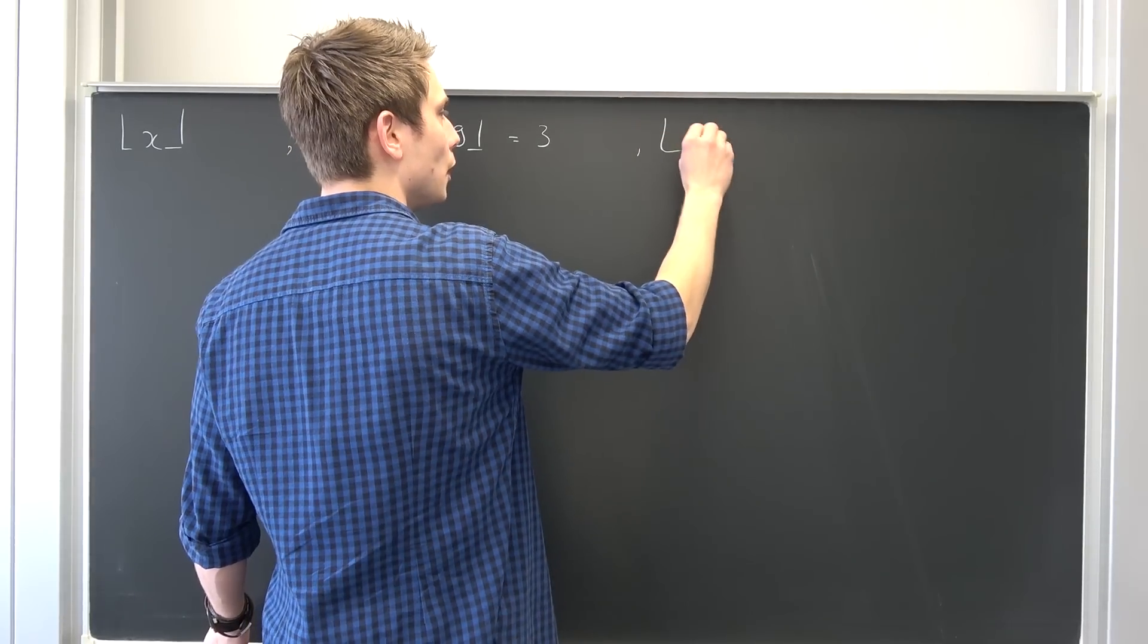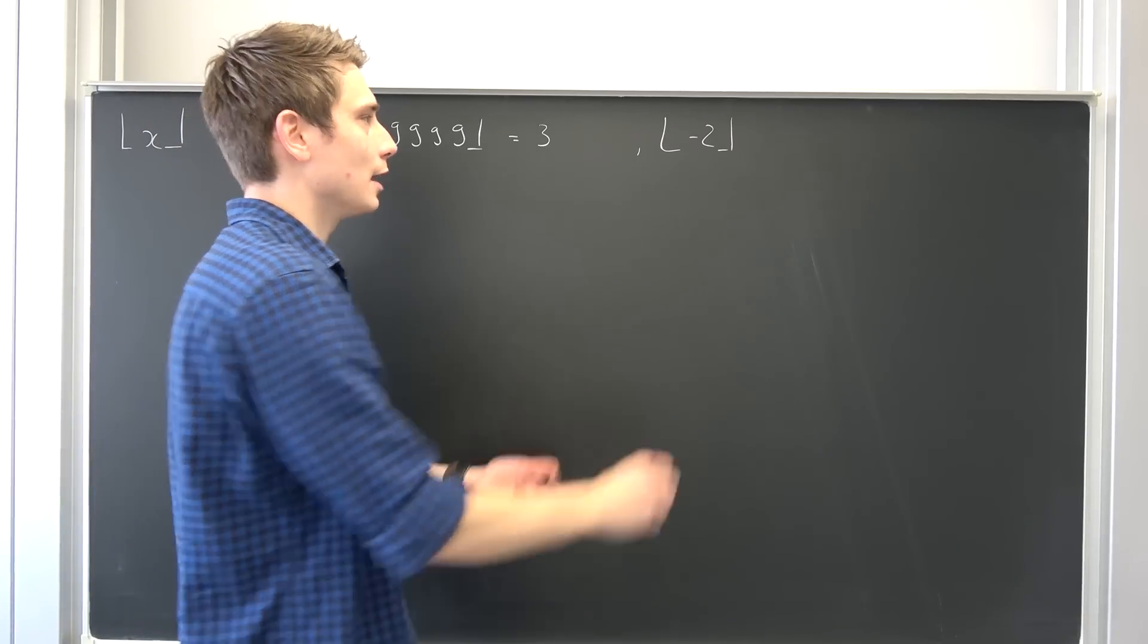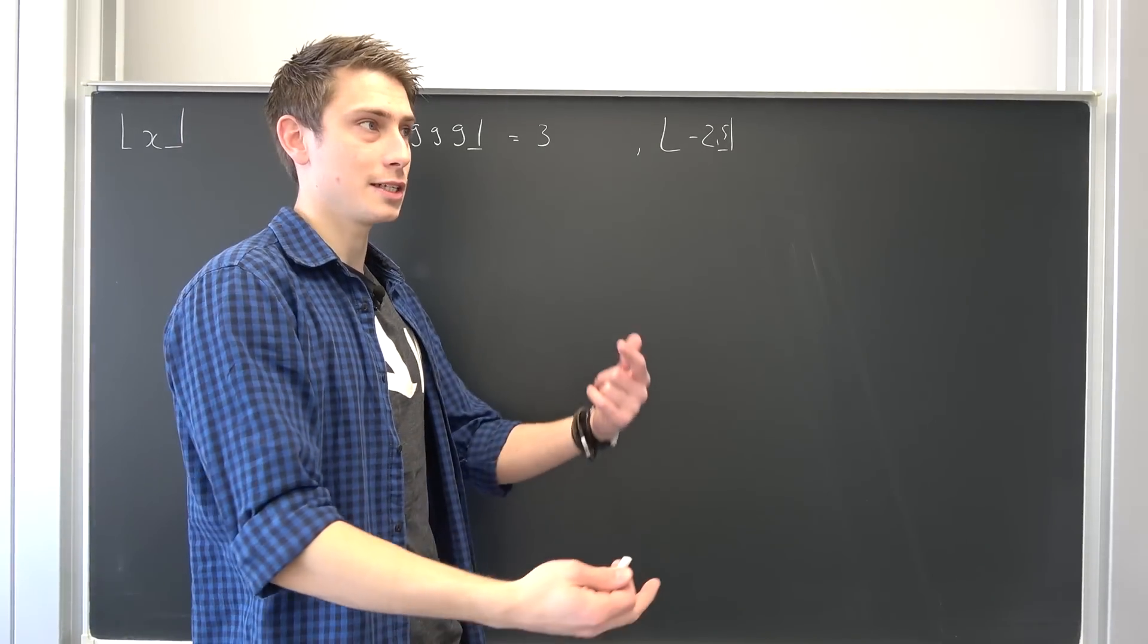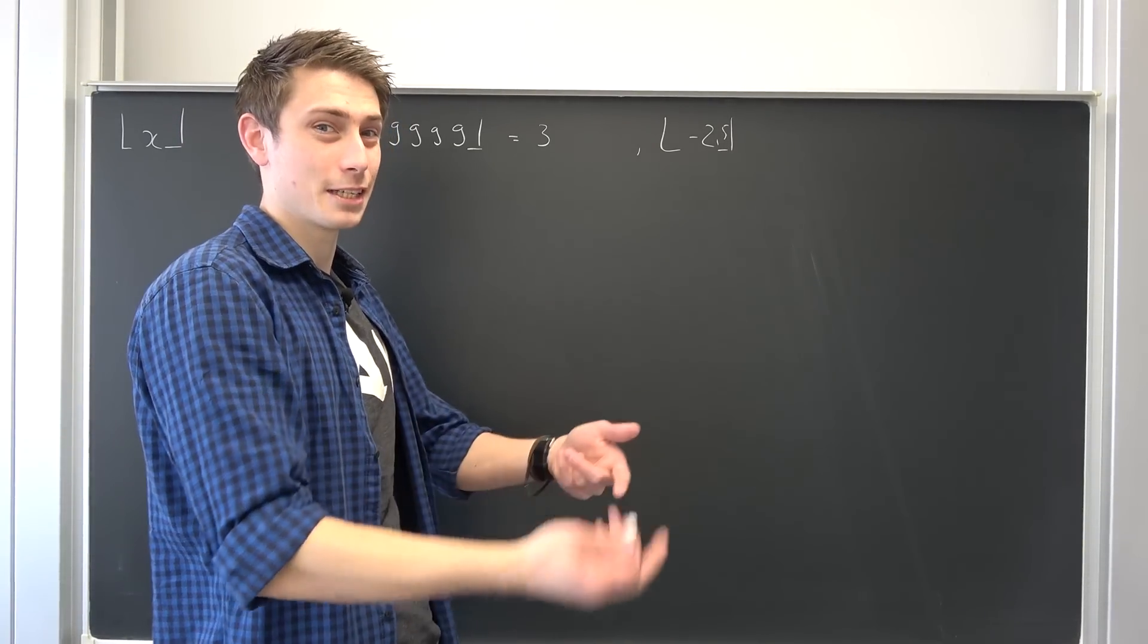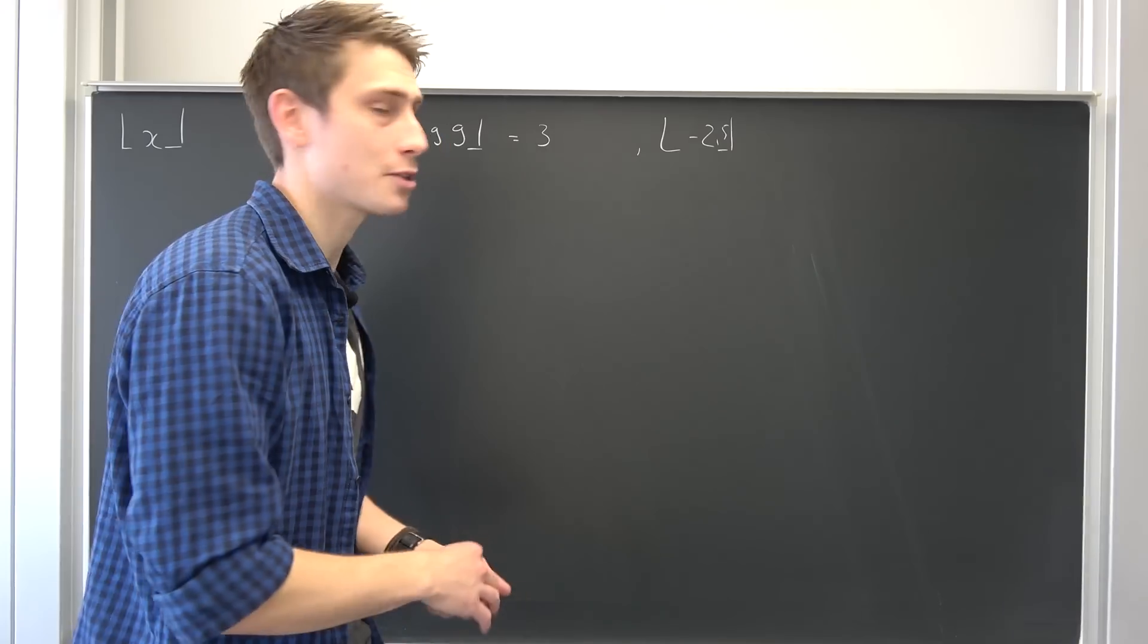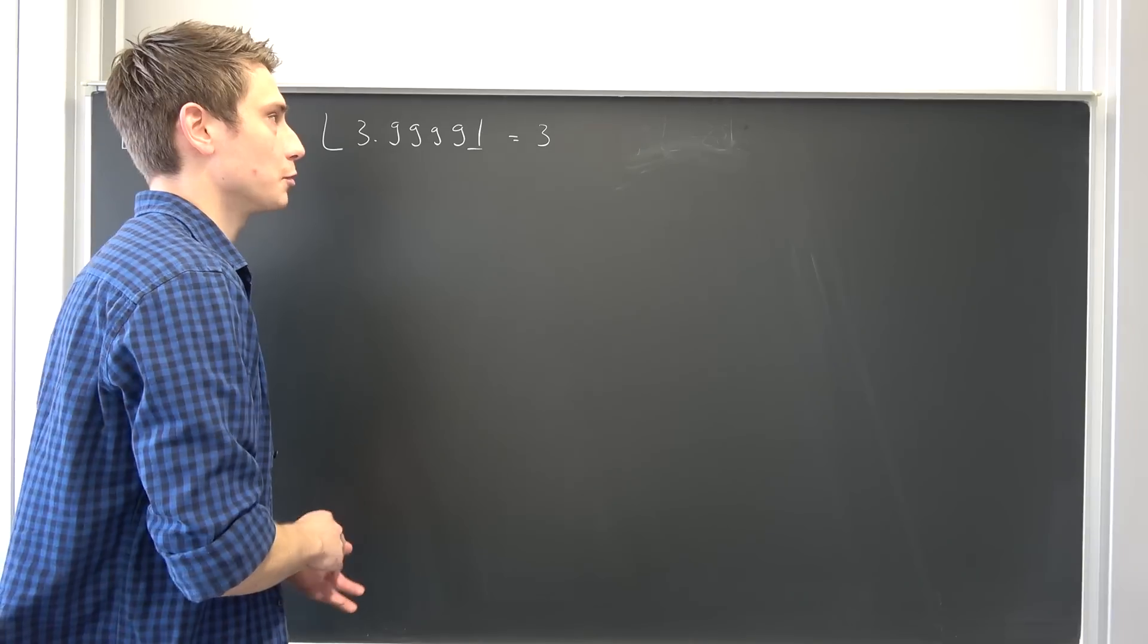If you have the floor of negative 2.5, rounding down to the nearest integer would be negative 2 or negative 3. It really depends on your source, but that's not part of this video. We are only acting in the positive reals.